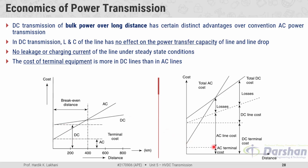In AC transmission, the AC terminal cost is less than the DC terminal cost. The line cost is more in AC compared to DC. The cost due to losses is much more in AC compared to DC for distances greater than the break-even distance. So the break-even distance is where the cost of AC and DC transmission systems becomes the same; beyond it DC is better, and below it AC is better.